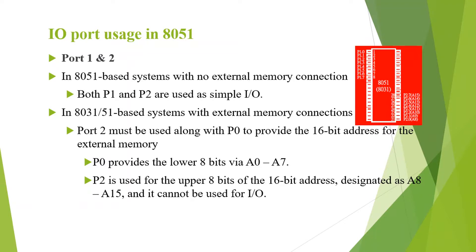In 8051-based systems with external memory connection, port 2 will be used only as address bus and cannot be used as an IO port, whereas port 1 can be used as IO port. Port 2 along with port 0 provides the 16-bit address for external memory: port 0 provides the lower 8 bits A0 to A7, and port 2 provides the upper 8 bits A8 to A15.